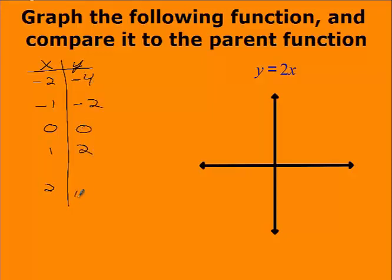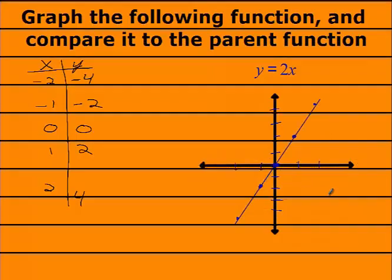Plug in negative 2 for x, what do you get? Negative 4. Two times negative 1 is negative 2. Plug in a 0. Plug in a 2, what do you get? We're at 0, 0. At 1, I'm at 2. At negative 1, I'm at negative 2. At 2, I'm at 4. At negative 2, I'm at negative 4. So grab my ruler. And that's close enough to say it's good.